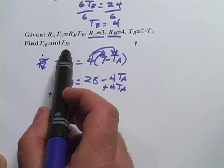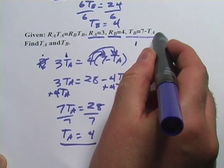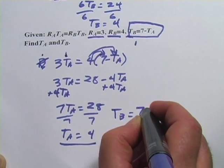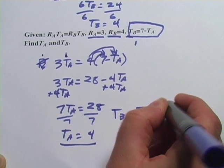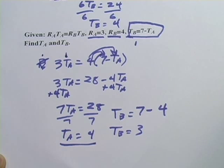But we want to find t sub a and t sub b, so we'll take this, and we'll plug it back in this equation right here. Because t sub b equals 7 minus t sub a, which is 4, t sub b equals 3. So that's a little bit of work with equations with subscripted variables.